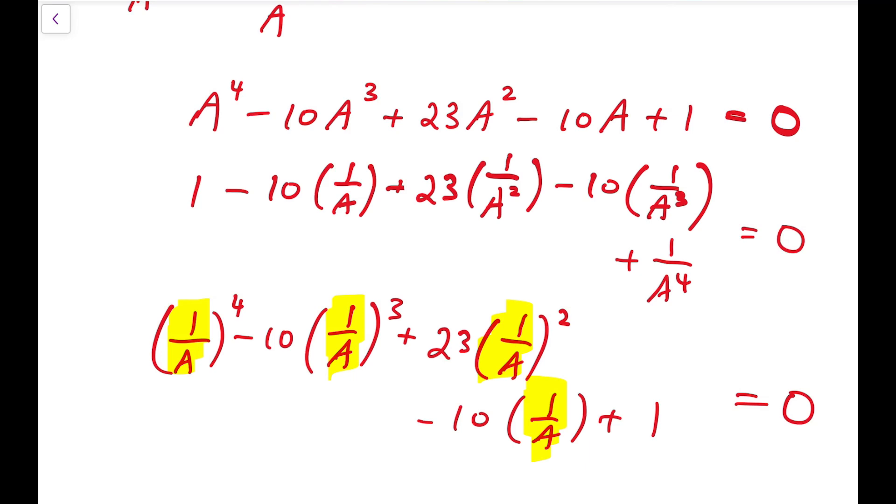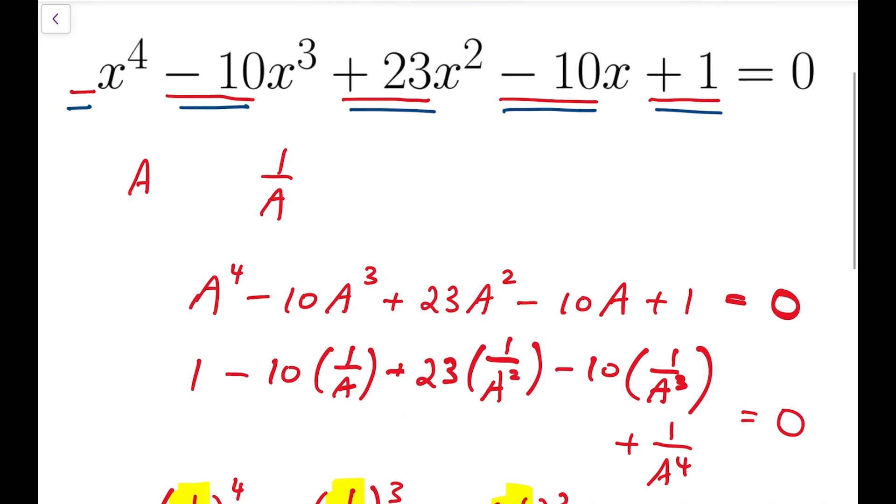Now because the polynomial has degree 4, that means there are 4 solutions. And they can form two pairs, such that inside each pair, one solution is the reciprocal of the other. So I can let a, 1 over a, and then b, 1 over b, be the solutions of this quartic equation.